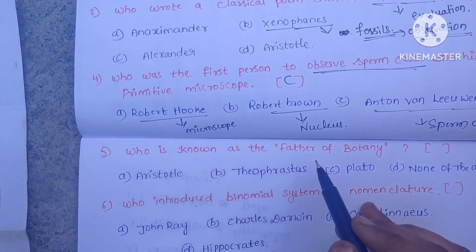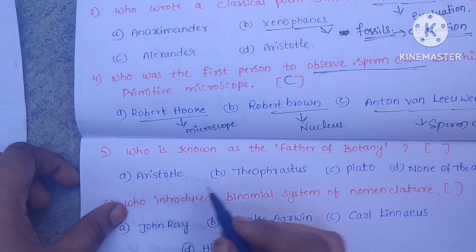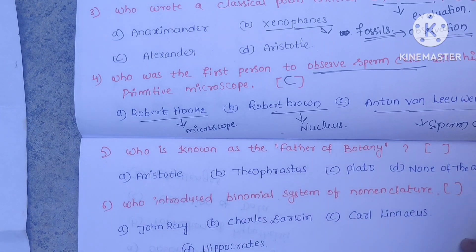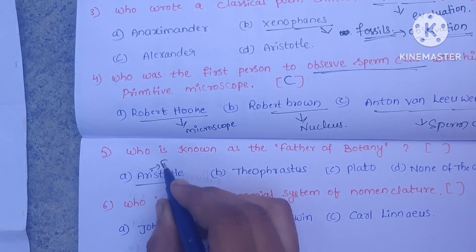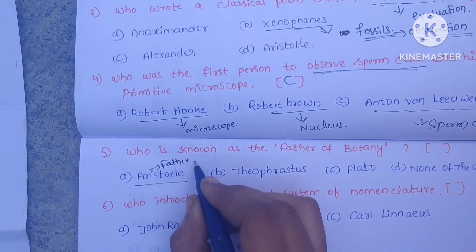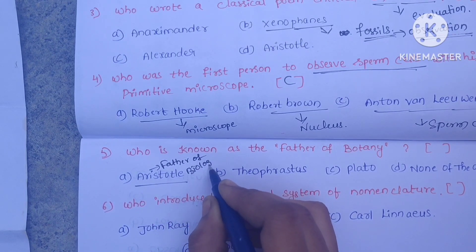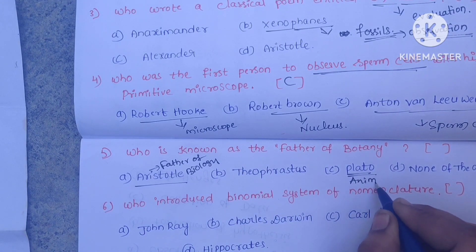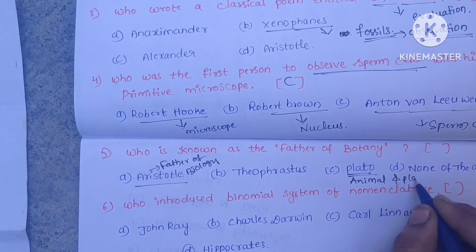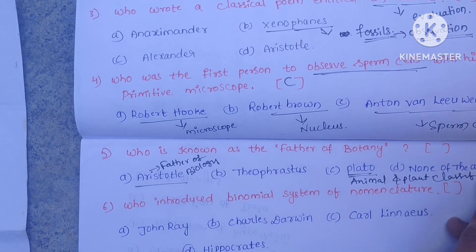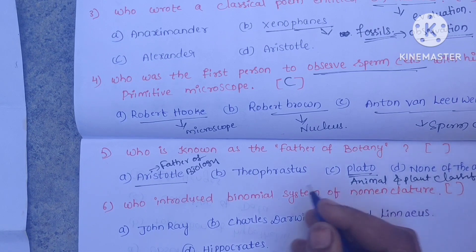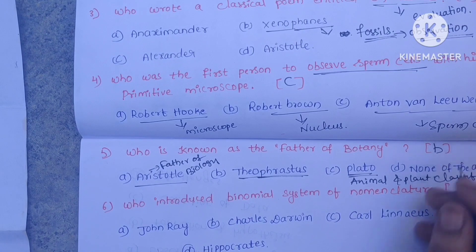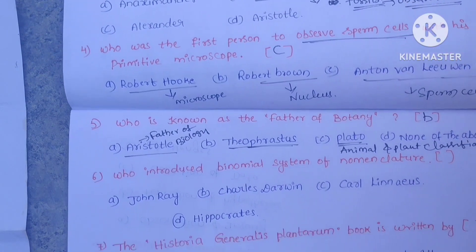The fifth question is: who is known as the father of botany? Options: A. Aristotle, B. Theophrastus, C. Plato, D. None of these. Aristotle is known as the father of biology, and Plato classified animals and plants. Theophrastus is the father of botany — so the correct answer is B. Theophrastus.